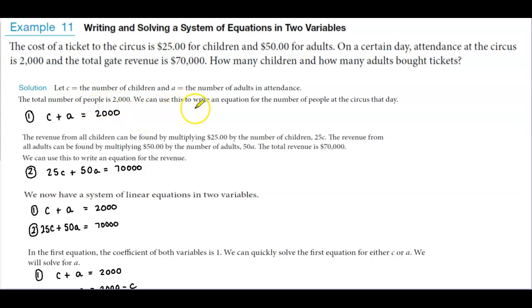We can use this to write an equation for the number of people at the circus that day. For equation one, we have C + A = 2,000.